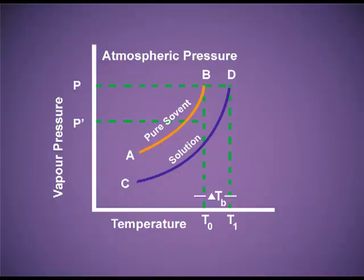Let me explain through a graph. The graph is between temperature along the x-axis and vapour pressure along the y-axis. You can see two curves. One curve is for the pure solvent, that is AB, and another curve is for the solution, that is curve CD. From the figure you can see that the CD curve is below AB. This shows that at each temperature, the vapour pressure of the solution is less than the vapour pressure of the pure solvent. From the graph you can see that T°B is the boiling point of pure water, because at T°B the vapour pressure equals atmospheric pressure — just see point B — and at this temperature the pure solvent boils.